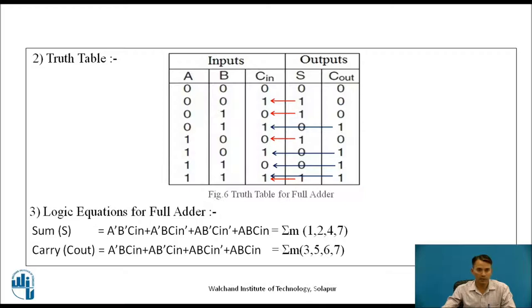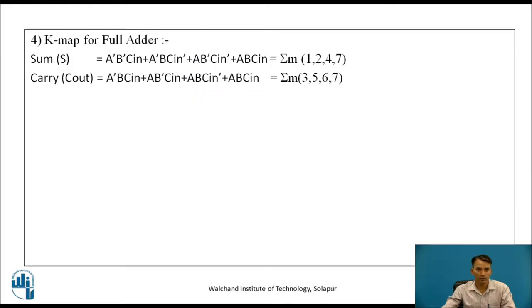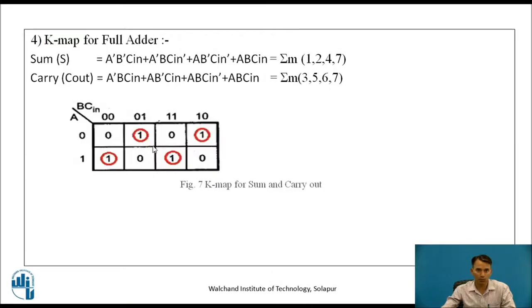There is a technique where we can reduce logical equations — recall which technique is used for minimizing the logical equation. The answer is K-map. K-map is a graphical representation where the minterms or maxterms from an equation are represented on the map. Putting 1s into the cells 1, 2, 4, and 7, we find there will be no pairs, quads, or octets, so we have to consider individual terms, and the equation of sum remains as before — there will be no reduction in this equation.